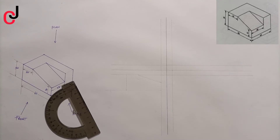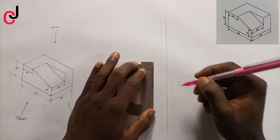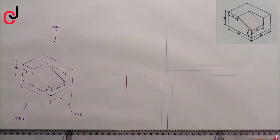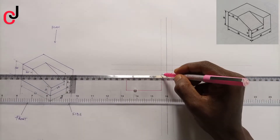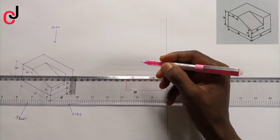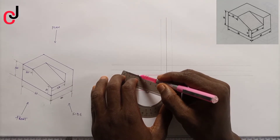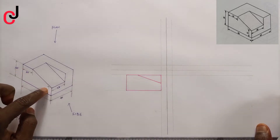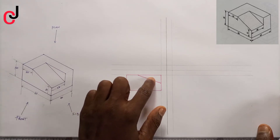Now for clarity purposes, to see our front view better, we'll outline using our pink pen. Watch properly — you can see this, and then you can see this, which is also this.